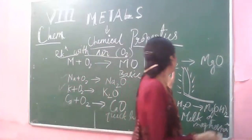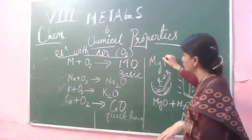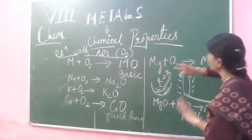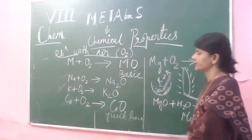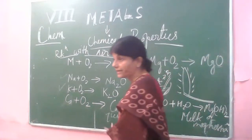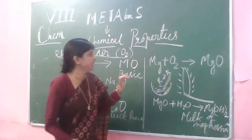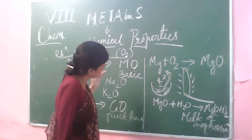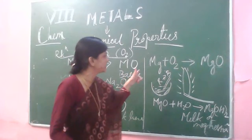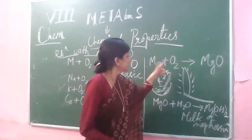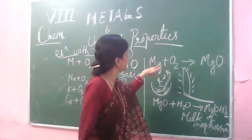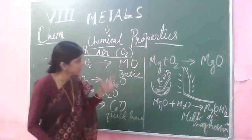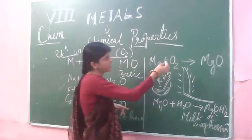Coming towards magnesium, which is fourth in reactivity: magnesium when reacted with oxygen does not react at room temperature. Magnesium will not show any reactivity towards air at room temperature. Oxygen will combine with magnesium only when you heat it. So in the experiment, we take a flame and bring the magnesium strip near the fire.